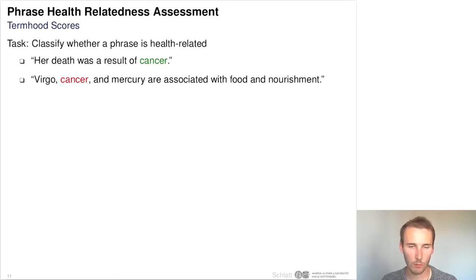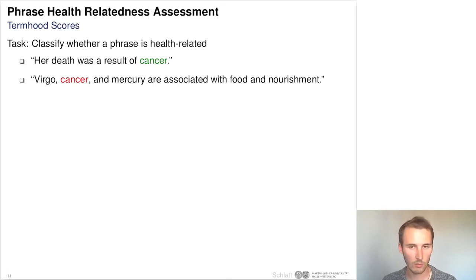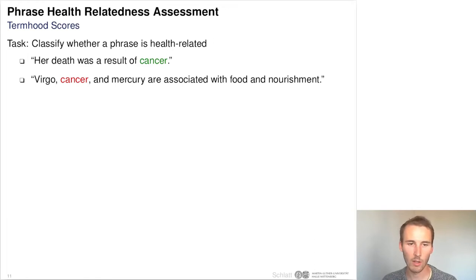Assessing the health-relatedness of a phrase is closely related to the task of word sense disambiguation. However, in this case we are not trying to detect the sense of a word but the domain of a sense of a word, and this can be quite difficult. For example, 'cancer' can take a health-related sense meaning a tumor — as in 'her death was a result of cancer' — but it can also take a non-health-related sense as an astrological concept, specifically the stellar constellation, and in that case would not be health-related.